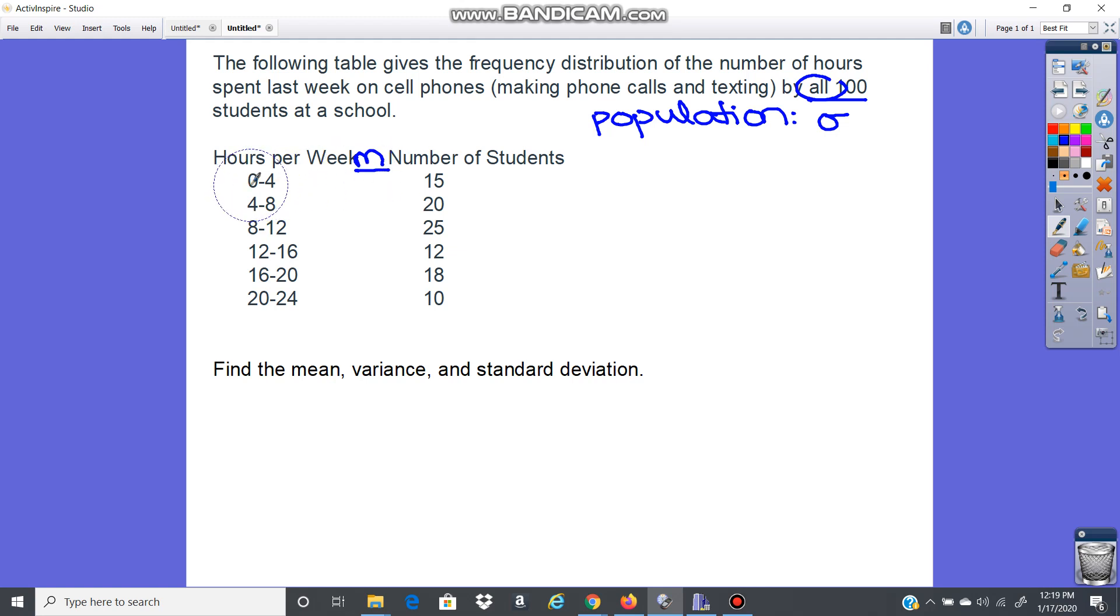You're going to take the lower limit and the upper limit divide by two. So zero plus four is four divided by two, two. Four plus eight is 12 divided by two is six. Eight plus 12 is 20 divided by two, 10. There you're going to get 28 divided by two, 14.